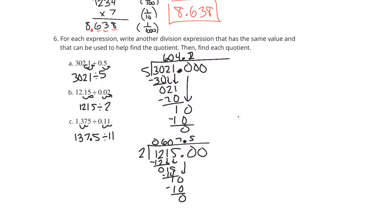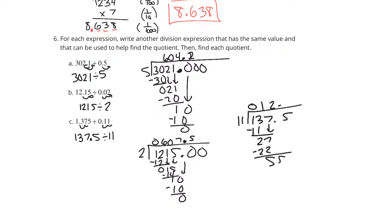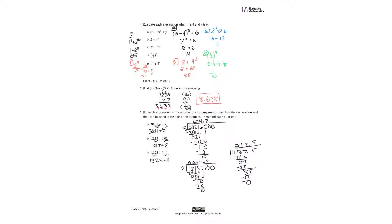Likewise, for 137 and 5 tenths divided by 11: 11 doesn't go into 1; goes into 13 one time. Subtract 11, get 27 — goes in 2 times. Subtract 22, get 5; bring down the 5 to get 55 — goes in 5 times. Get 0, so the answer is 12 and 5 tenths. That's it for these practice problems. Good luck.